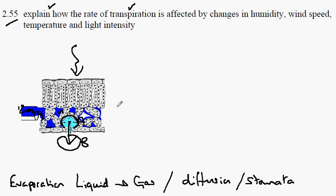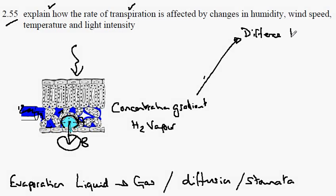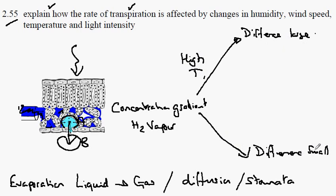So the concentration gradient for water vapor. If there's a big difference, then we would have a high rate of transpiration. If the difference between A and B is small, then we will have a low rate of transpiration.